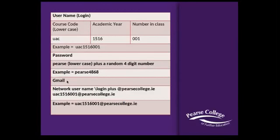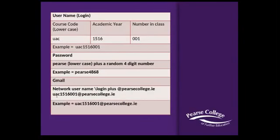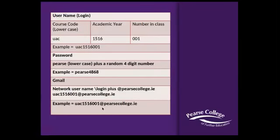You will also have a Gmail login. It will be made up of your username login — so in this case UAC1516001 — but as with all Gmail addresses, you have to have an ending, so it will be uac1516001@PEARScollege.ie. You will still use the same password to log into your Pierce College Gmail, which is PEARS4868 in this particular student's case.